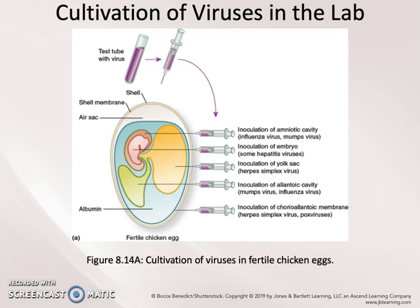One of the more common mechanisms of cultivating viruses in the lab is using fertile chicken eggs. When you buy chicken eggs in the grocery store, they have not been fertilized — they are just eggs and no sperm has been allowed to enter.